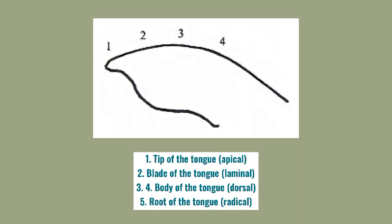Look at the picture — this shows the parts of the tongue. The first part is the tip of the tongue, also called apical. After the tip there is the blade of the tongue, also called laminal. Next, the biggest part of the tongue is the body of the tongue, or dorsal. And the last one is the root of the tongue, which we can also call radical.